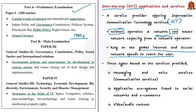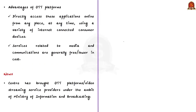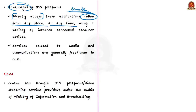Services under the OTT umbrella are related to media and communications. There are basically three types of OTT applications: one, messaging and voice services or communication services; two, application ecosystems linked to social networks and e-commerce; and three, video or audio content. Well-known examples include Skype, WhatsApp, Instagram, Google Talk, e-commerce sites like Amazon, and movie platforms such as Amazon Prime or Netflix. The main advantage is that users can directly access these applications online from any place at any time using a variety of internet-connected devices. OTT services are generally free or lower in cost compared to traditional methods of delivery.